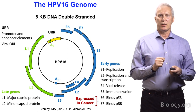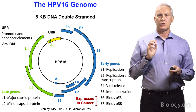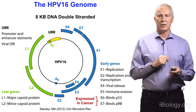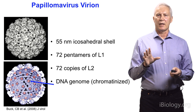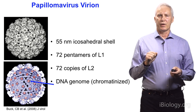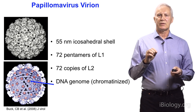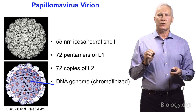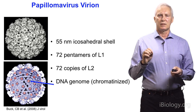The other region of the genome is called the late region, which I'll mainly be talking about today, which encodes two proteins: the major virion protein L1 and the minor virion protein L2. The structure of the virion is depicted on this slide. It's a non-enveloped virion, about 55 nanometers, with a regular icosahedral array, composed of 72 pentamers of the L1 major capsid protein and up to 72 copies of the minor capsid protein L2. In the middle, not shown here, is the DNA genome, which is histone-bound.